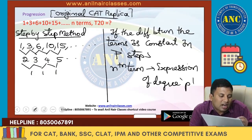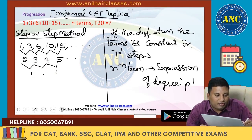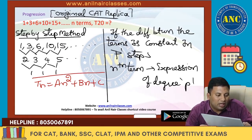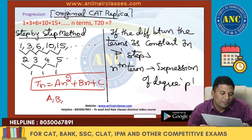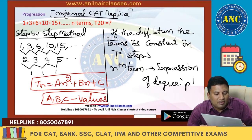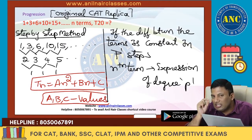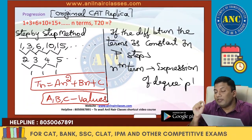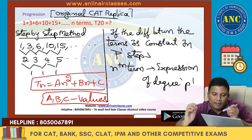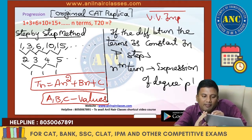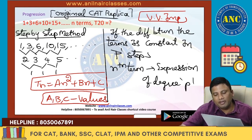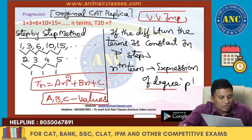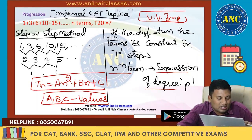Since the difference is constant in two steps, the Nth term will be a degree-2 expression. The generic form is AN² plus BN plus C. We need to find the values of A, B, and C. Step-by-step approach: substitute N = 1 to get A + B + C = 1; N = 2 gives 4A + 2B + C = 3; N = 3 gives 9A + 3B + C = 6.